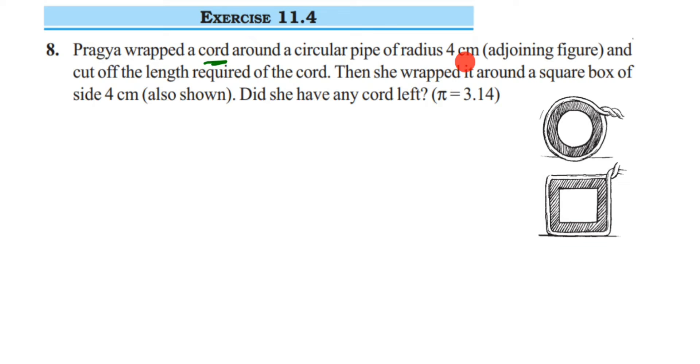Later she wrapped it around a square box. After that, she took the same wire, the same cord which she used for the circular pipe, and she wrapped it around the square box of side 4 centimeters, like this.